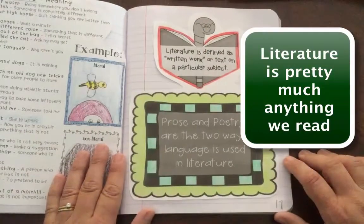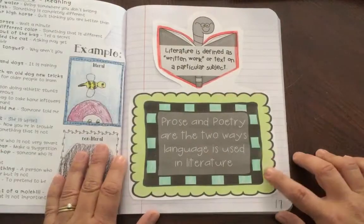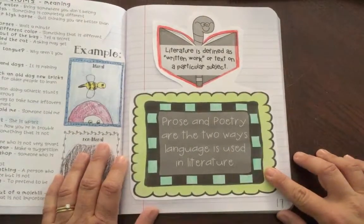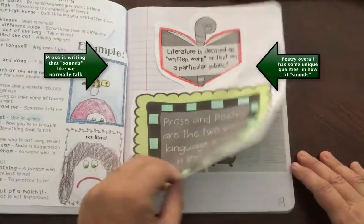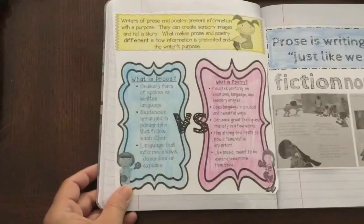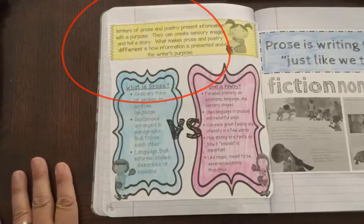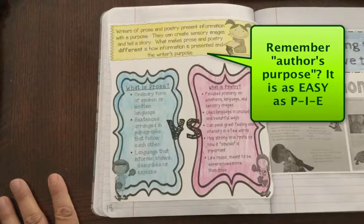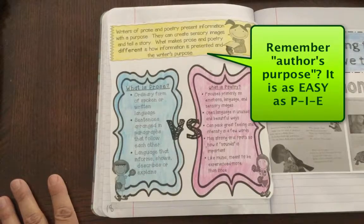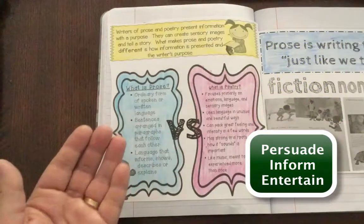We'll talk about literature — really, literature is just any written work that we're reading. There are two ways that language in general is used in literature: prose and poetry. Prose and poetry present information with a purpose. They can create sensory images and tell a story, they can provide information to us, and they can persuade, inform, or entertain us.